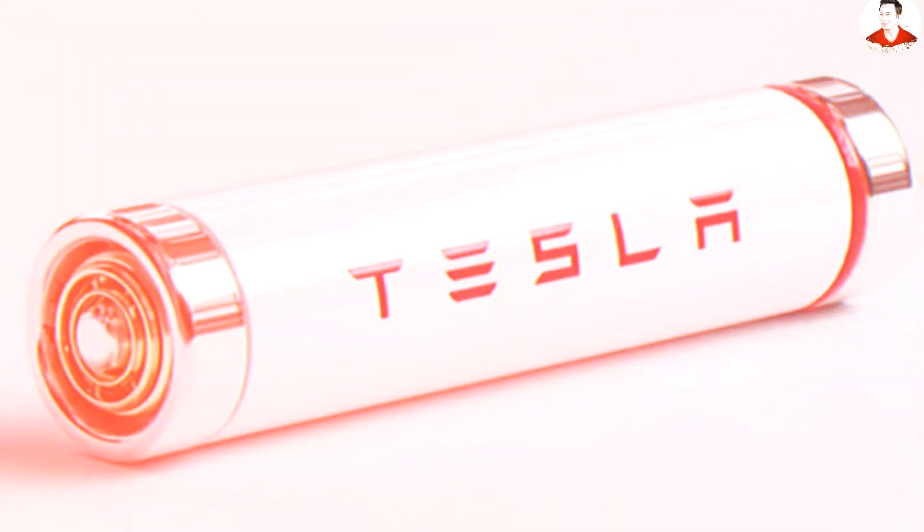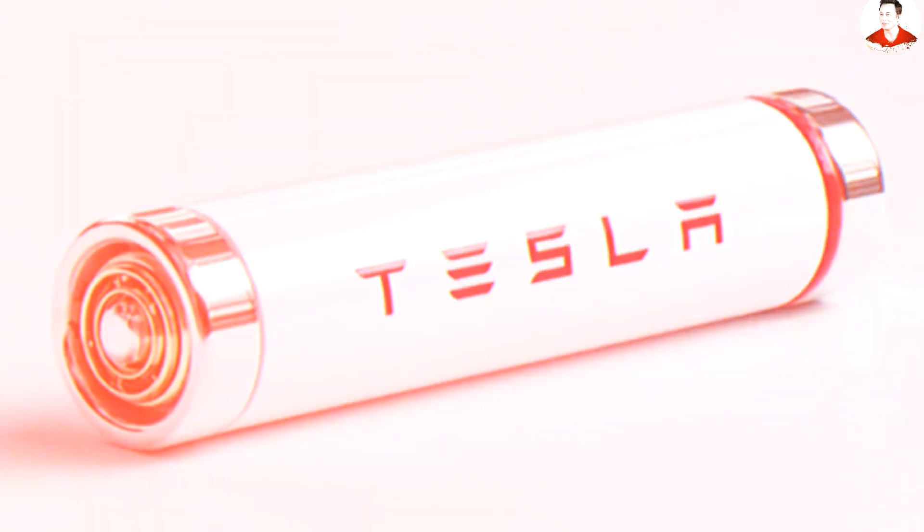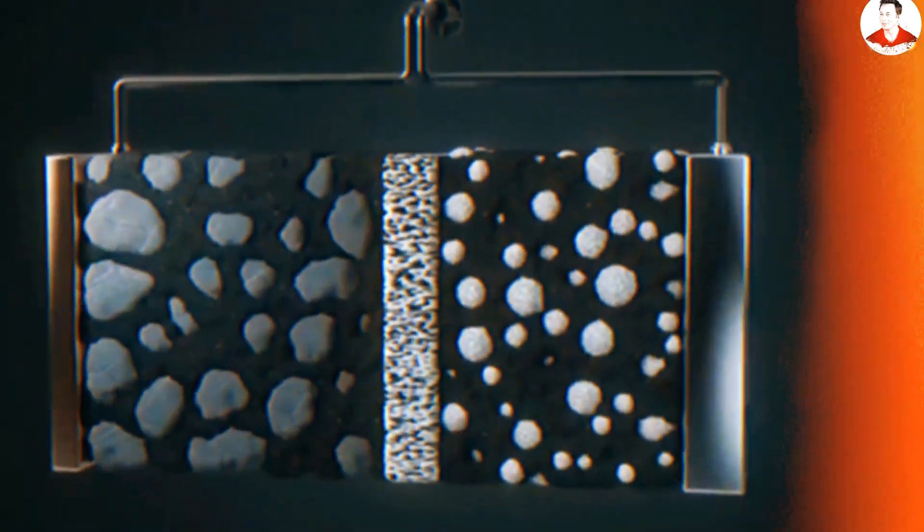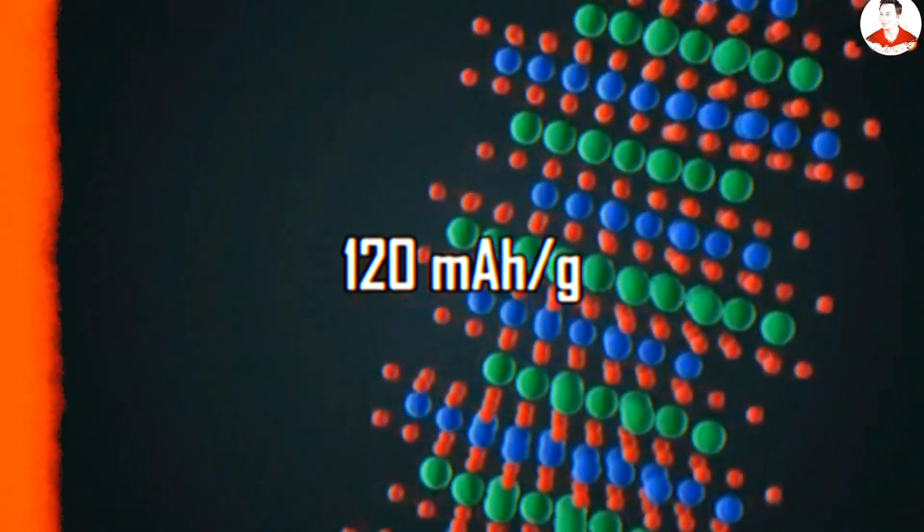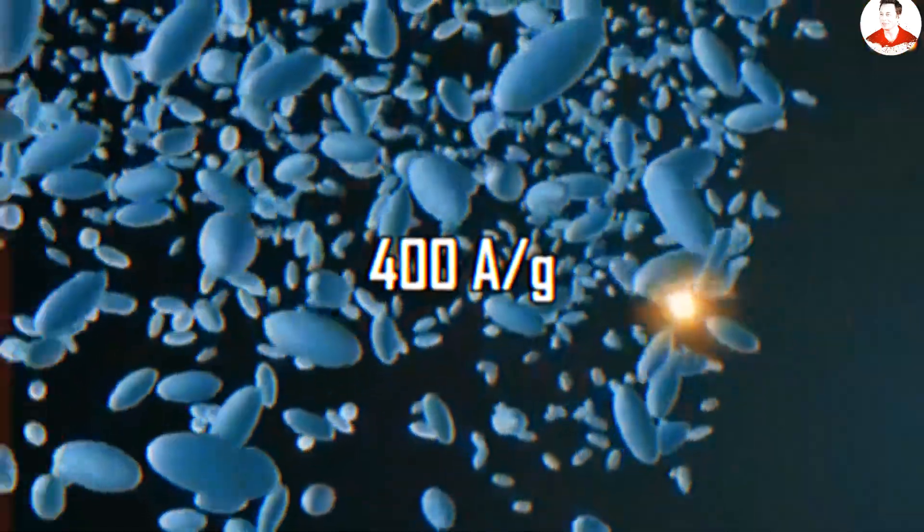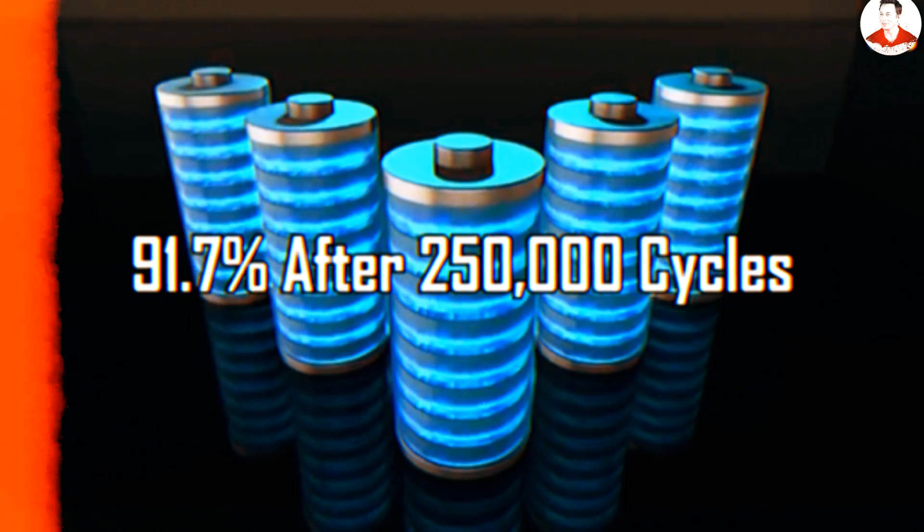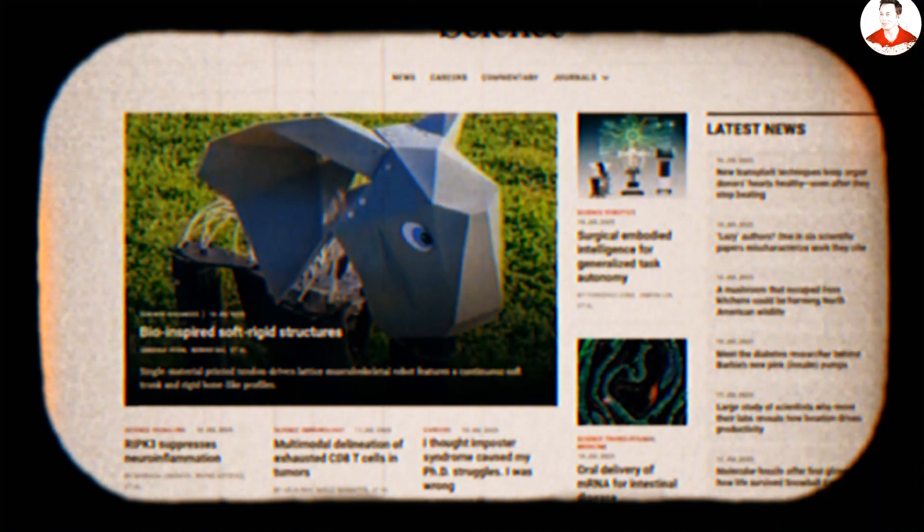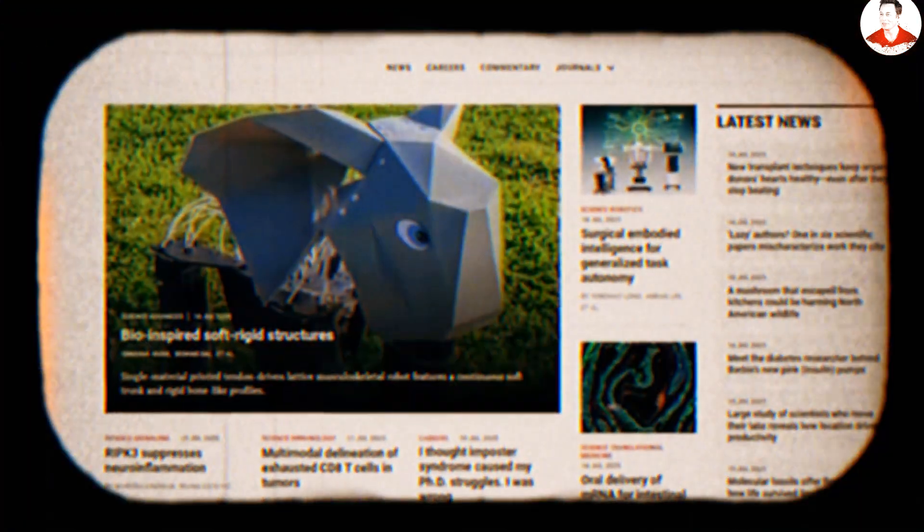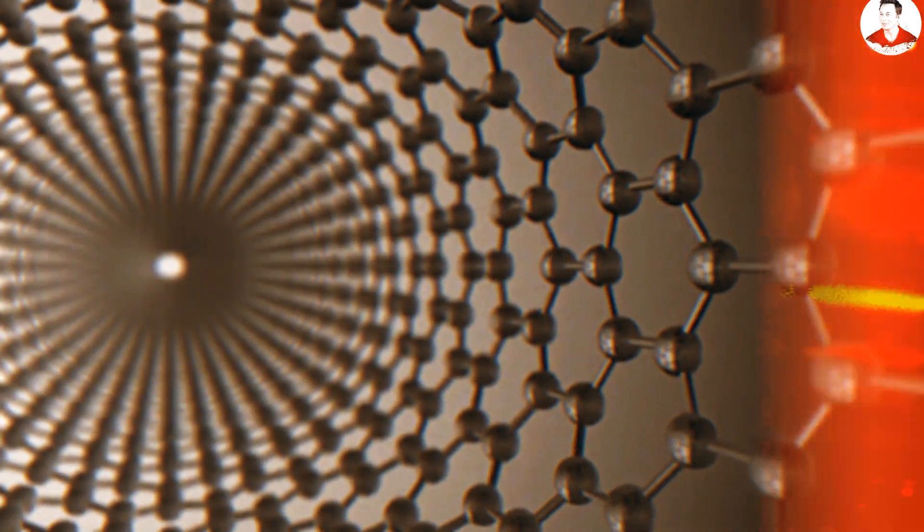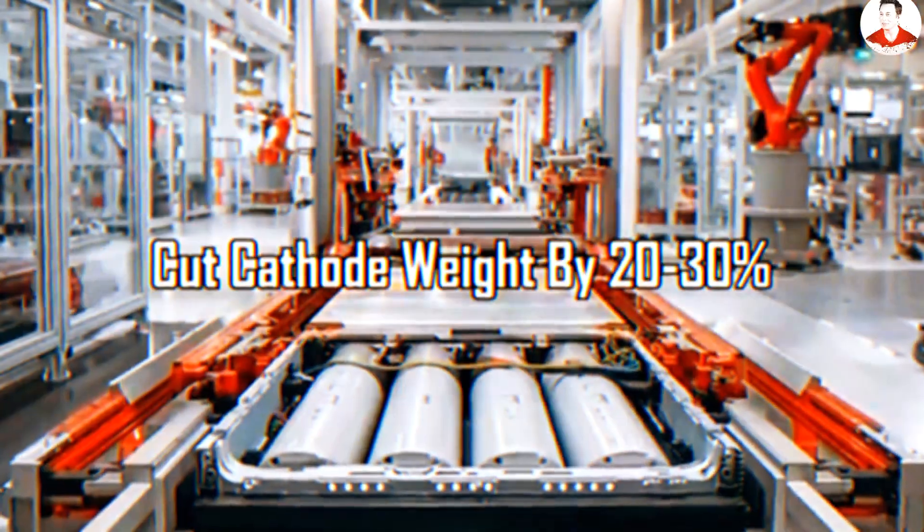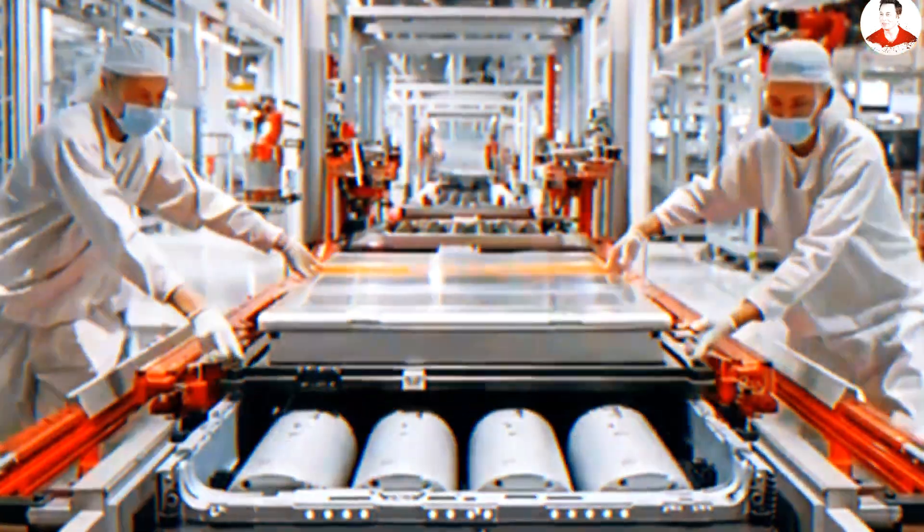The real game changer lies in the cathode technology. Research has shown that graphene-based cathodes can achieve extraordinary performance metrics. Such a cathode retains a high specific capacity of around 120 milliamp-hours per gram at an ultra-high current density of 400 amperes per gram with 91.7 percent retention after 250,000 cycles. According to groundbreaking research published in Science Advances, the ultra-low density of graphene materials combined with their exceptional conductivity allows engineers to cut cathode weight by 20 to 30 percent compared to the heavy nickel-cobalt-manganese cathodes in traditional batteries.